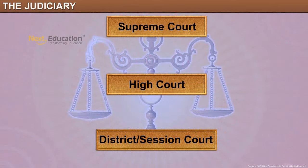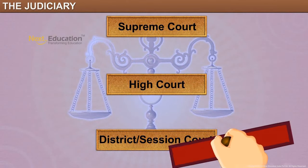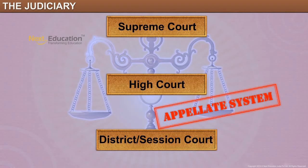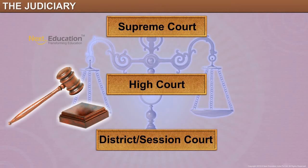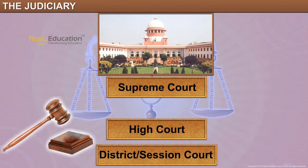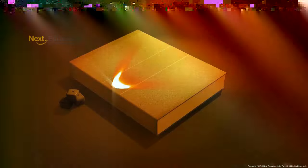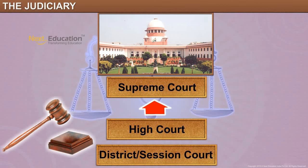The courts are connected with each other through the appellate system that exists in India. This means that if a person feels they have not been given justice in a lower court, like the Sessions or District Court, they can approach the High Court to re-look at the case. If justice is still not met, the case is taken to the Supreme Court, where the final judgment is made.